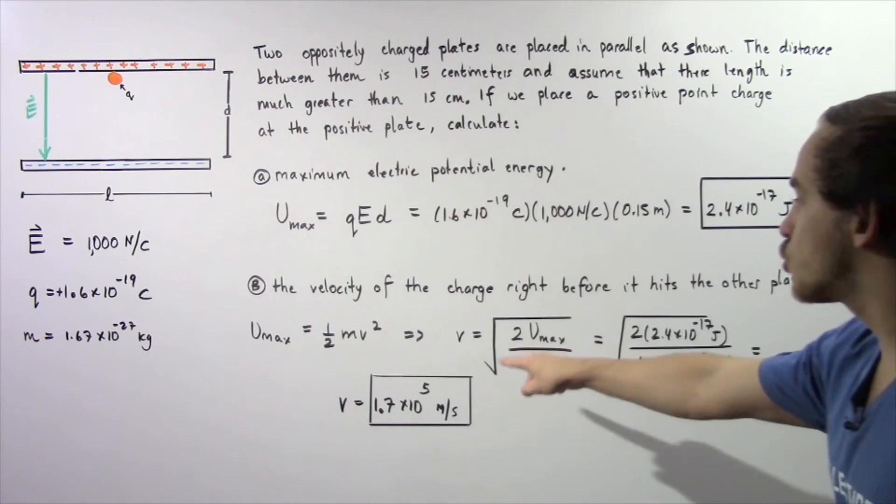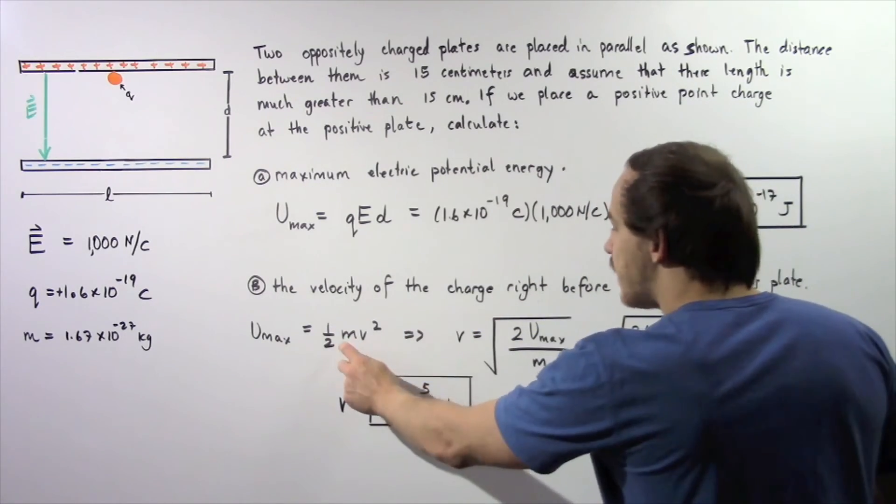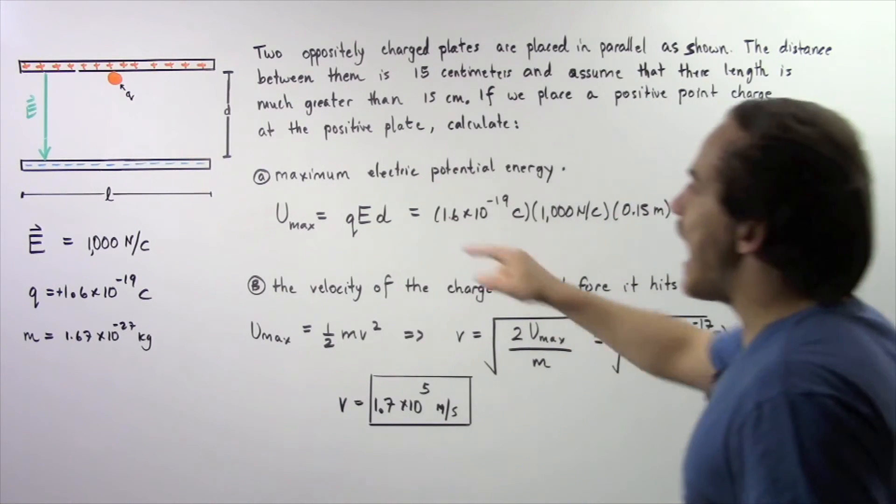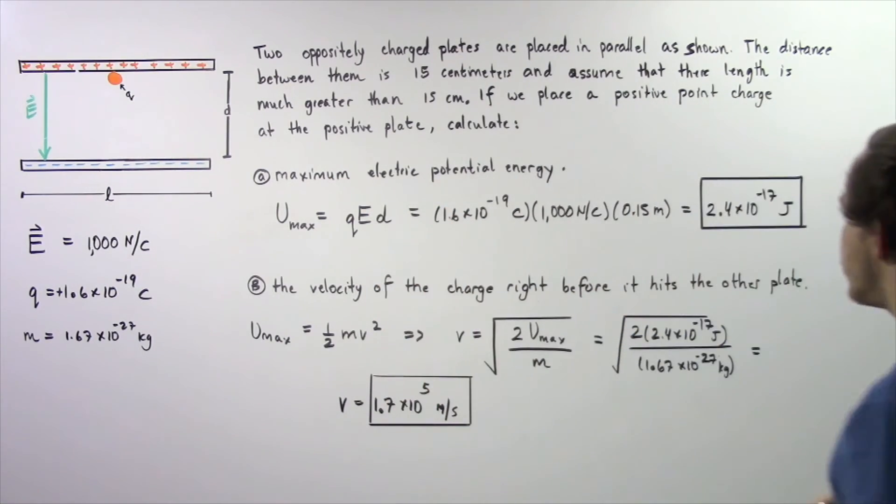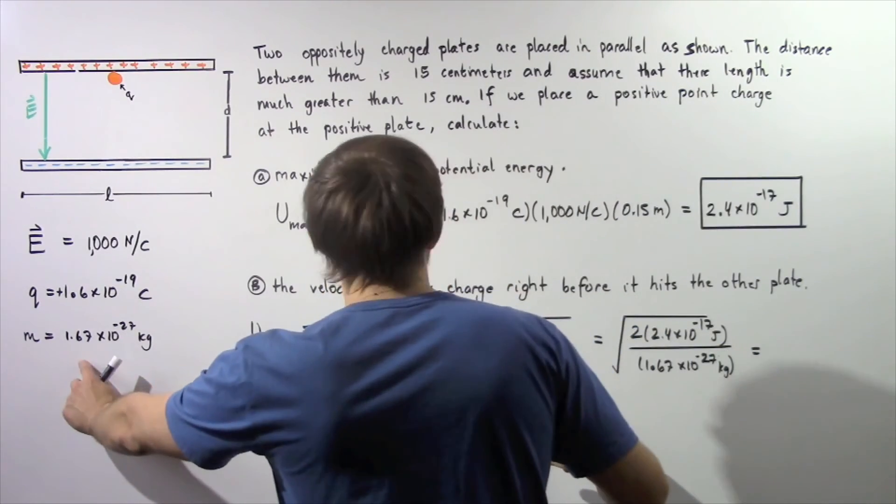The velocity is equal to the square root of 2 multiplied by U max divided by the mass. We found what the U max was in part A, so we plug that in for our U max and divide by the mass which was given here.